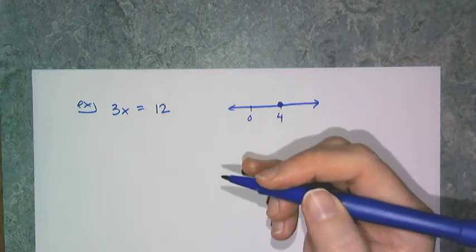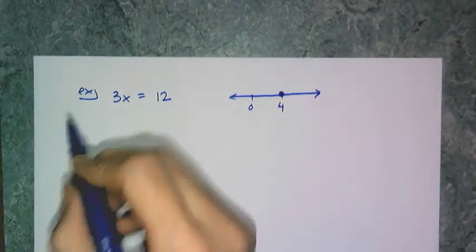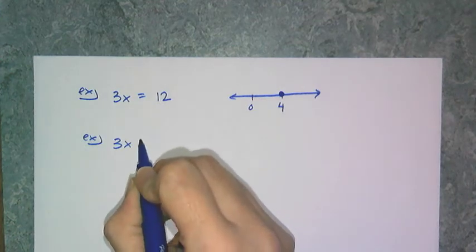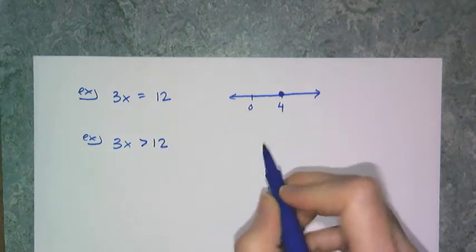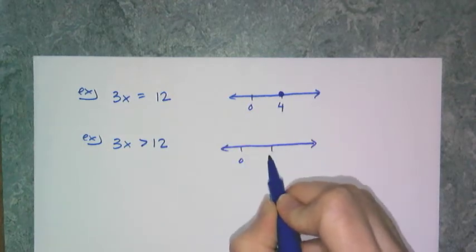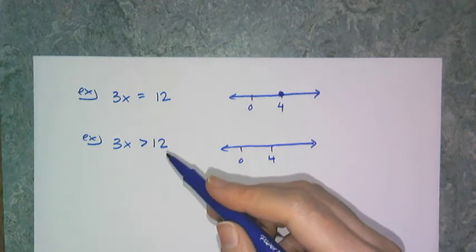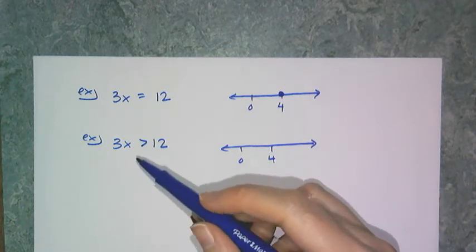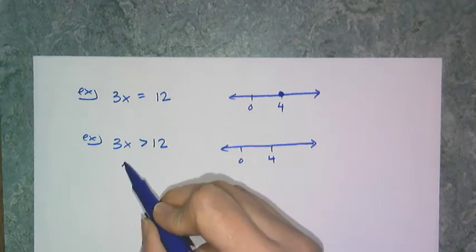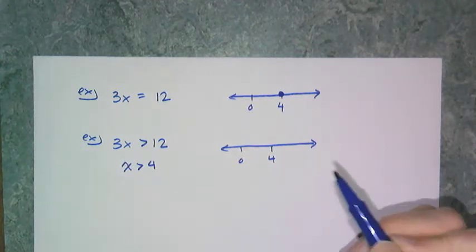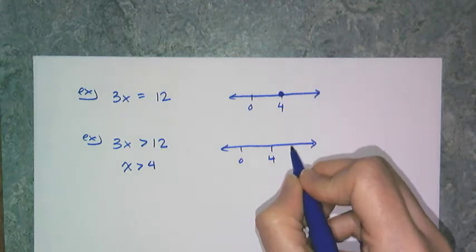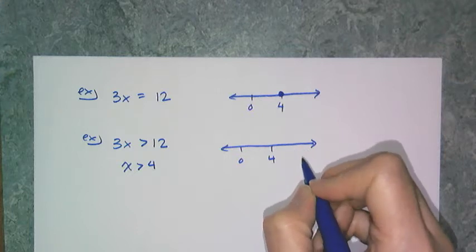If I change this symbol to 3x is greater than 12, then what I'm looking for are the numbers where 3x is greater than 12, or 4 equivalently, where x is greater than 4. So I'm looking for all the x values greater than 4, like 5, 6, 4.5, 19, 10 million, whatever.